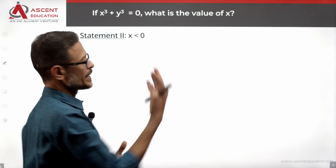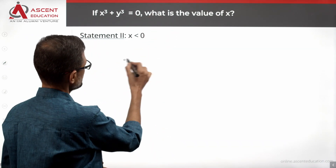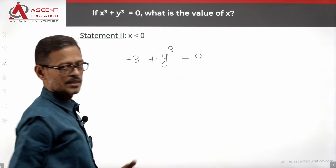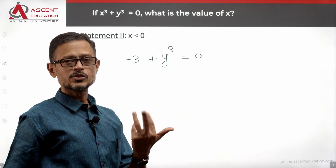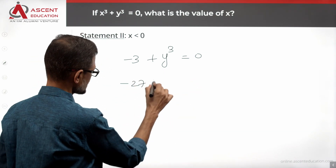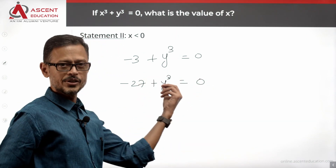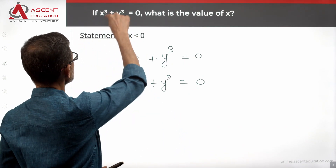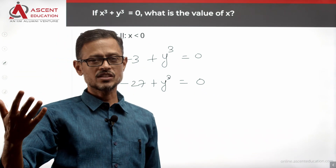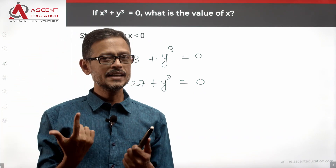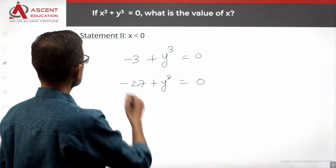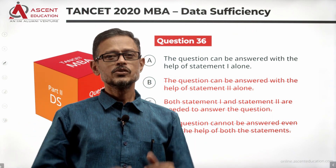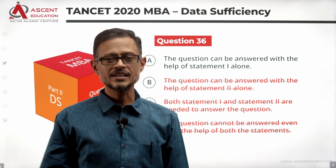But let's look at statement 2 alone to confirm. Statement 2 says x is a negative number. With x cube plus y cube equals 0 and x negative, x could be minus 3 giving y cube equal to 27, or x could be cube root of minus 3, or x cube could be minus 27 — there are infinite possibilities. So statement 2 alone is not sufficient. Statement 1 alone is sufficient, statement 2 is not sufficient. The answer option is A.